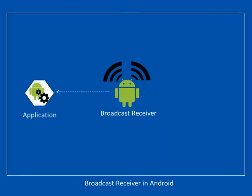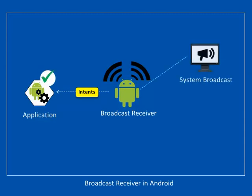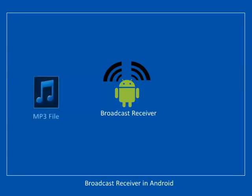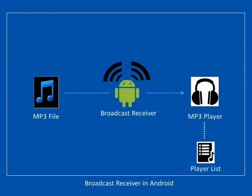Broadcast Receiver enables applications to receive intents. These received intents are broadcasted by the system or by other applications, even when other components of the application are not running. For example, when an MP3 file is downloaded, the MP3 player gets notified about it and gets added to the player list. The MP3 getting added to the MP3 player list can only take place when the MP3 player registers an event. This action is done by Broadcast Receiver.